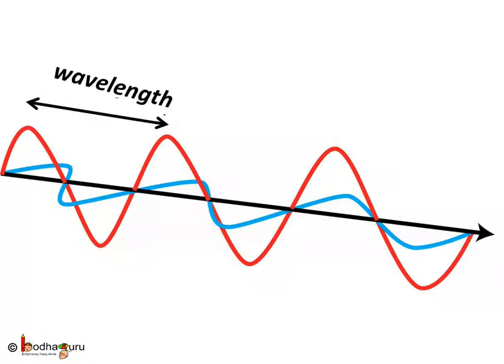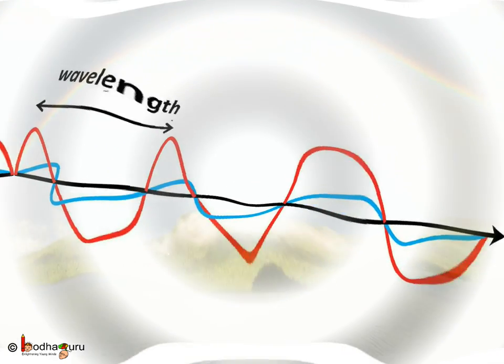The number of peaks that passes through a point at a given time is called its frequency. This means longer the wavelength, lesser the number of peaks that passes through a point per second. Hence, we can say longer wavelength means lower frequency.